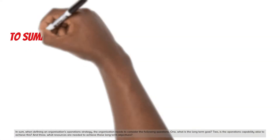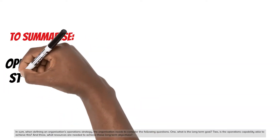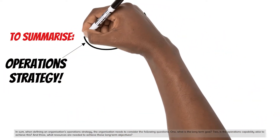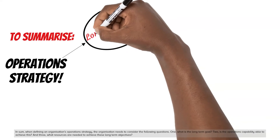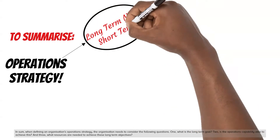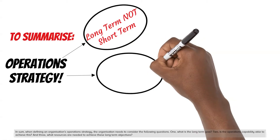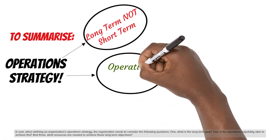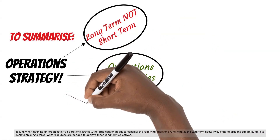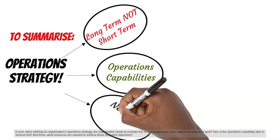In sum, when defining an organization's operations strategy, the organization needs to consider the following questions: One, what is the long-term goal? Two, is the operations capability able to achieve this? And three, what resources are needed to achieve these long-term objectives?